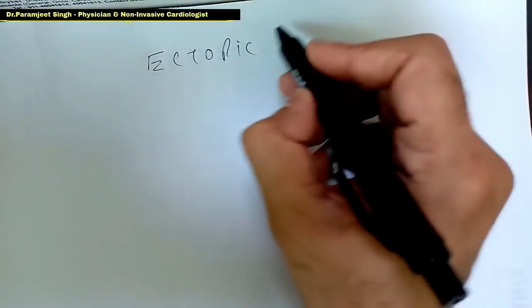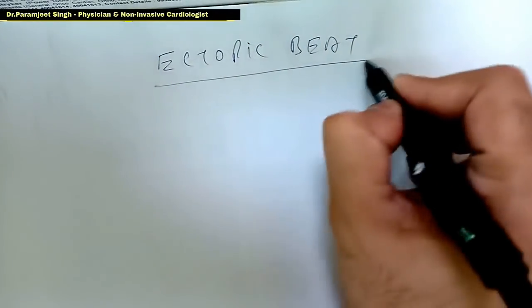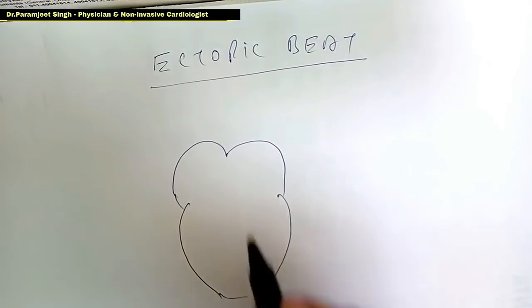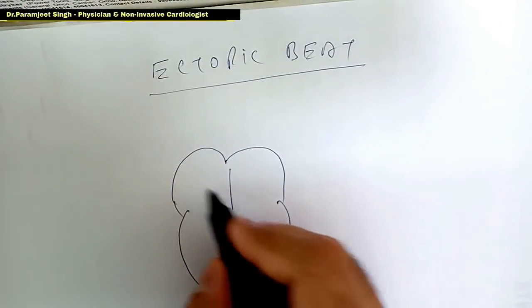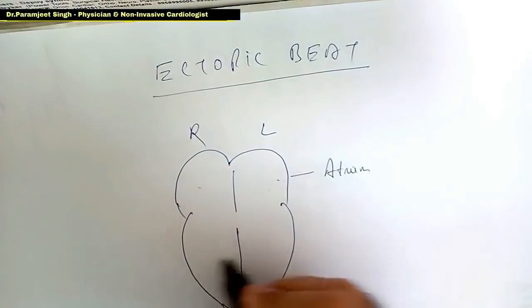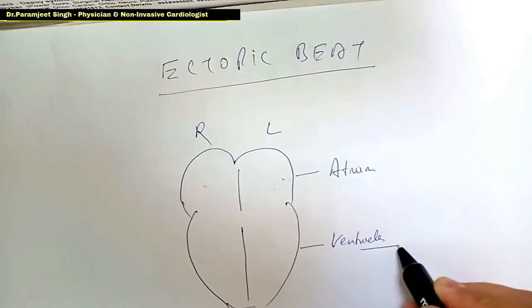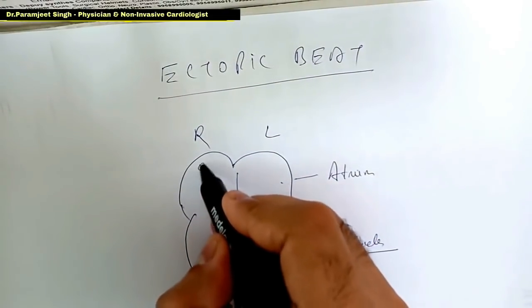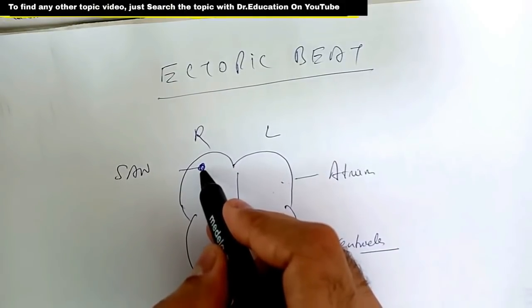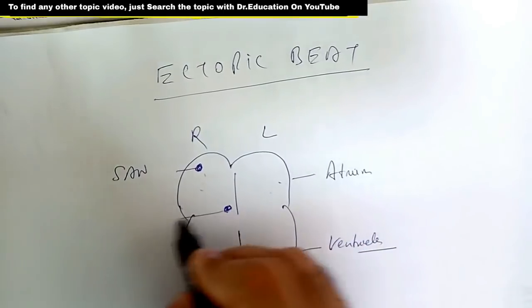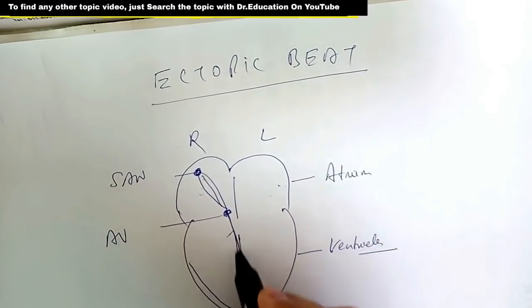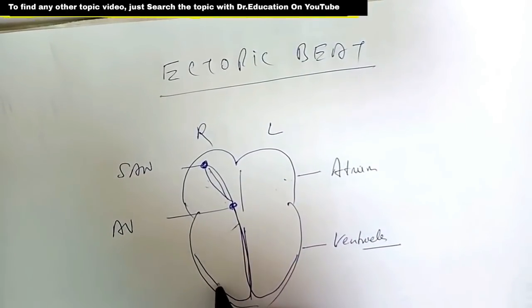So what is ectopic beat? Look at the heart. In the heart, a pacemaker - pacemaker means the beats generate. Your heart has four chambers. These four chambers, left and right, the upper chambers are called atrium, and the lower chambers are called ventricles. In the right atrium is the pacemaker. This is the SA node. Here the nerve impulses, heartbeat impulses, generate. It goes to the AV node, then goes to the His fibers, and then it goes through the entire ventricles.